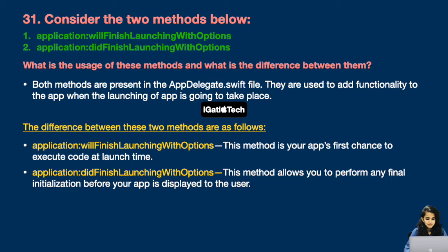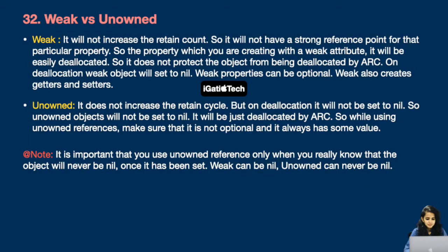Both methods are present in the AppDelegate.swift file. They are used to add functionality to the app when the launching of the app is going to take place. The main difference: applicationWillFinishLaunching is your app's first chance to execute code at launch time, while applicationDidFinishLaunching allows you to perform any final initialization before your app is displayed to the user.